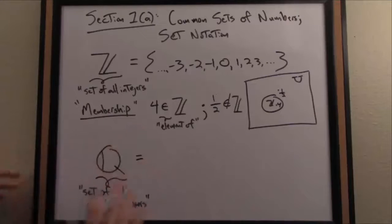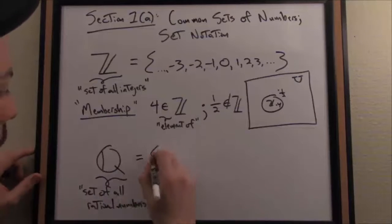What's a rational number? By definition, a rational number, just think ratio, is a fraction. The set of all rational numbers is the set of all fractions.